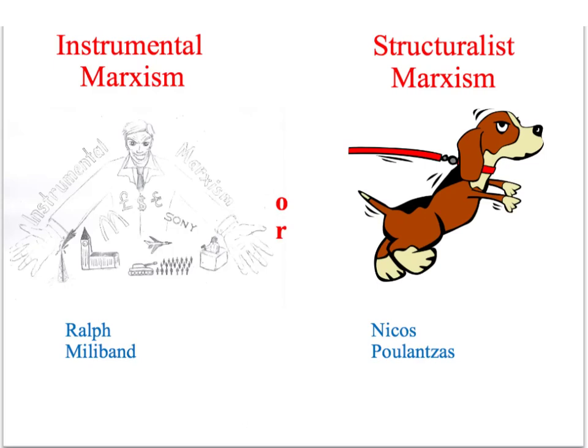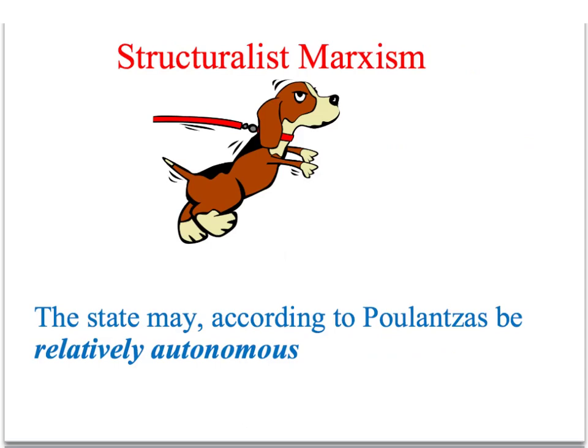Poulantzas disputed the idea that the state was simply a tool or instrument of the ruling class. Like a dog on a long leash, within capitalism the state has a degree of independence — or, to use Poulantzas' term, the state is relatively autonomous.